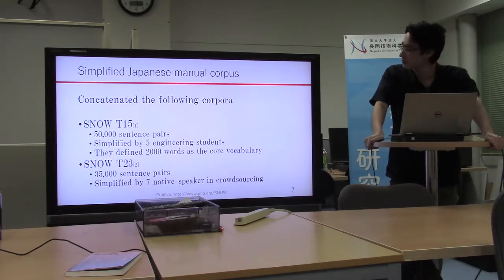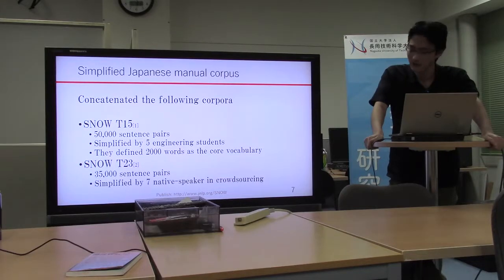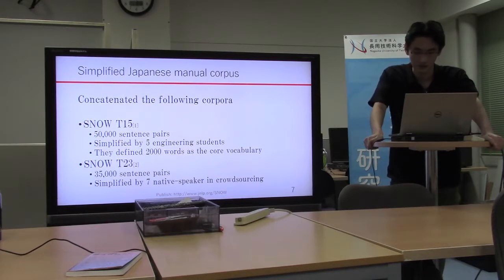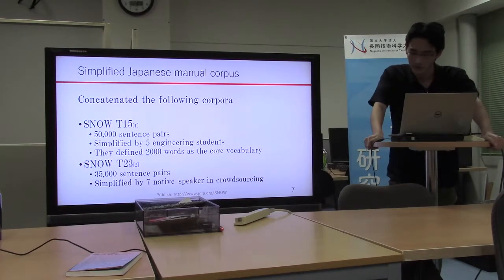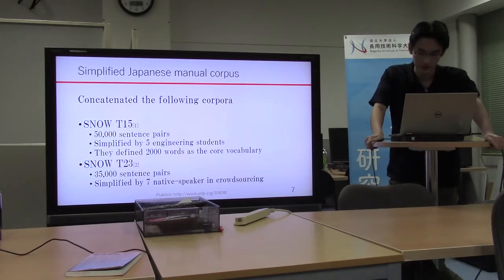We used a manual corpus for the experiment. The total is 85,000 sentences. Snow Tea 15 is the first Japanese simplification corpus, in which students simplified 57 sentences. Two thousand words were determined at the same time that this corpus was created.